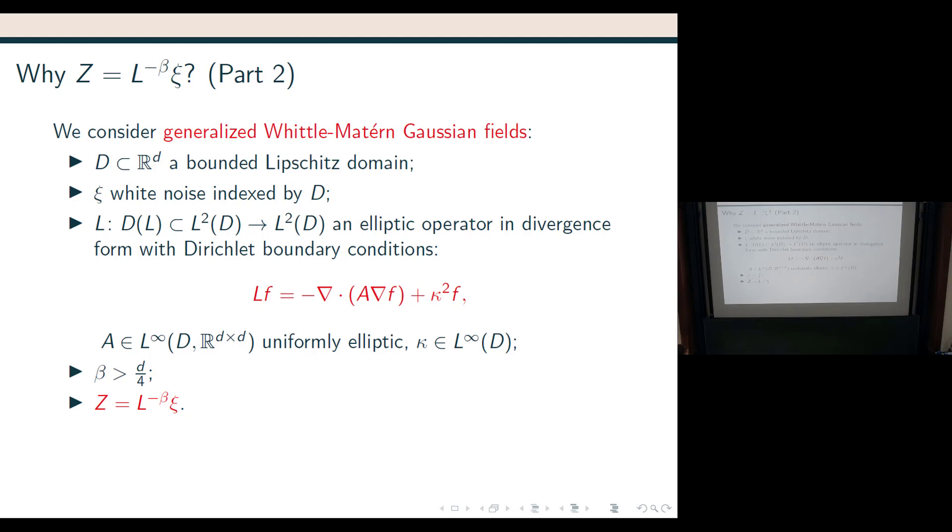So, we have, when we have, we consider what we call generalized Whittle-Matérn Gaussian fields, because, as I said, we look at L to the power minus beta psi. Xi is white noise indexed by D, again, always throughout this whole talk. And then, L is of this form, where A is, well, a priori, just bounded, uniformly elliptic matrix-valued function, and kappa also is bounded. And then, again, of course, beta is greater than d over 4, and I define C in this way.